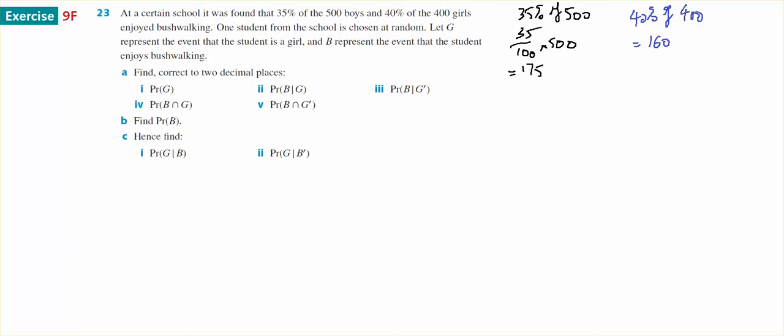In a certain school, 35% of 500 boys, so it's 35% of 500, so 175 boys, and 40% of 400 girls, so 160 girls, enjoy bushwalking. One student in the school is chosen at random. G represents that she is a girl and B represents the fact that they like bushwalking.